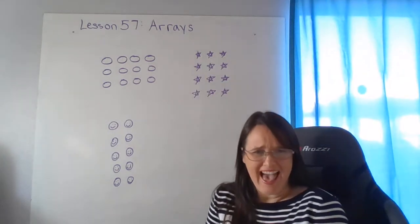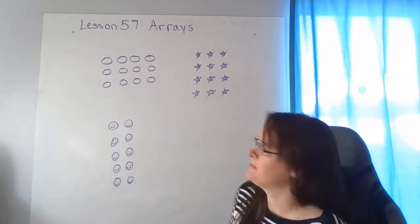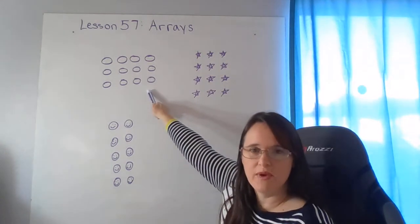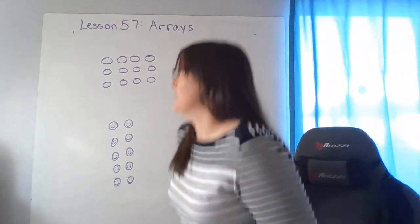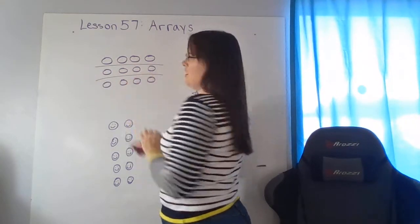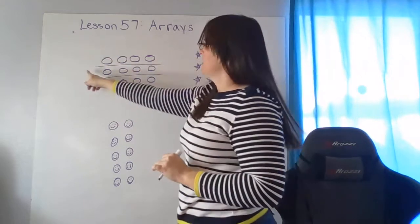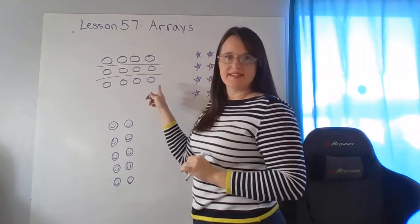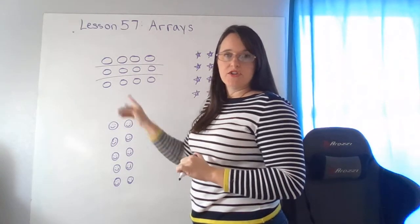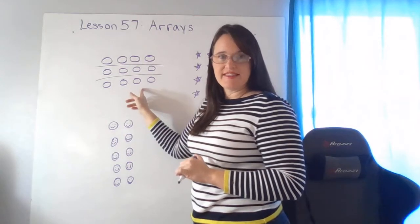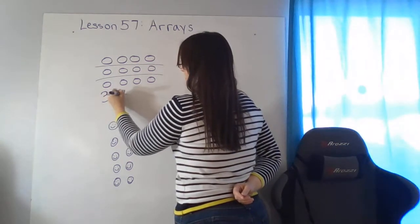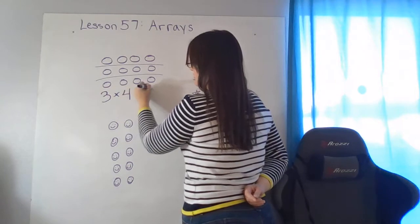So let's talk about how these arrays show multiplication facts. Here I've got a total of 12 circles and I've arranged them in three rows. This is a row, this is the second row, and this is another row of four. So three rows of four here. So the multiplication fact that this would go with is three times four equals twelve.